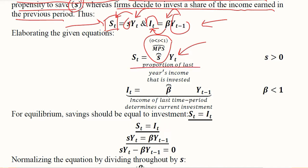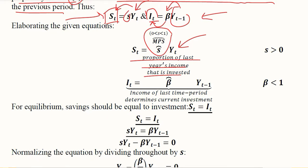This is the proportion of the last year's income which is invested, and this is the income of the last time period which determines the current investment. So last year's investment, a certain share of it is invested.